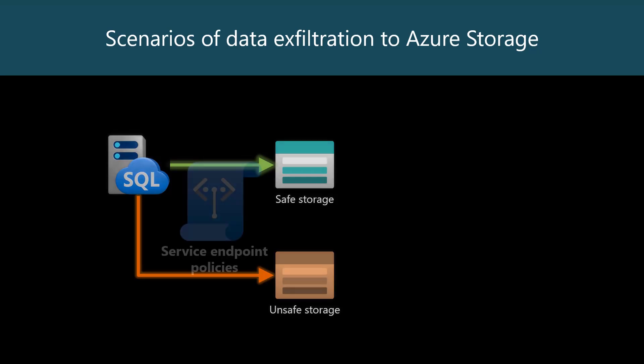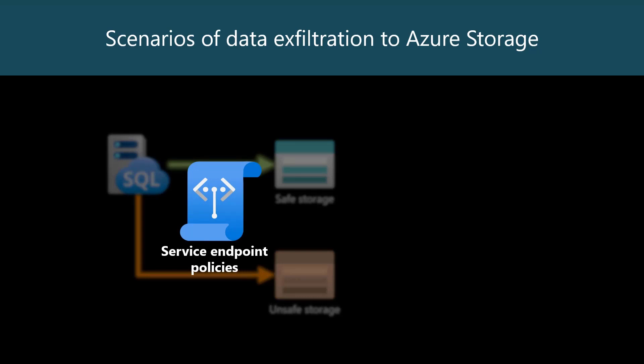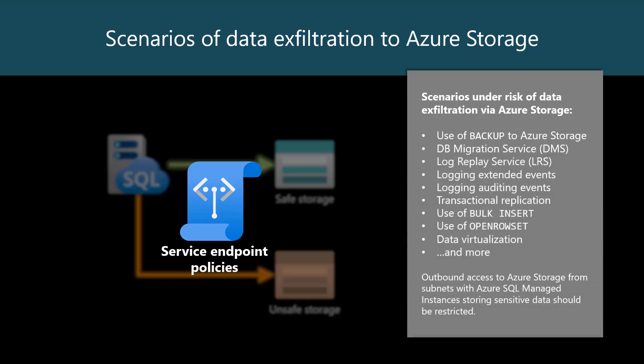Azure networking provides a mechanism called service endpoint policies. With service endpoint policies, you can declare which Azure storage accounts are safe sources and destinations for your data. This mechanism protects a range of scenarios, including backups, database migration and log replay services, logging extended and auditing events, transactional replication, data virtualization, and a few more SQL commands that directly target Azure Storage.